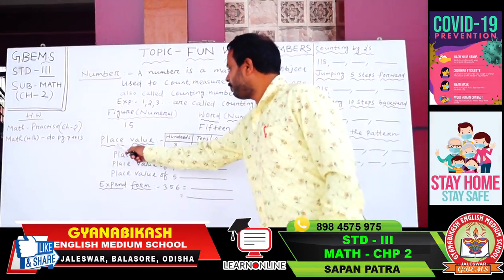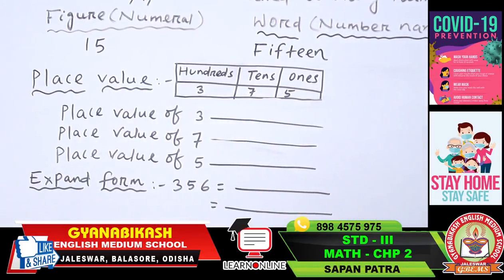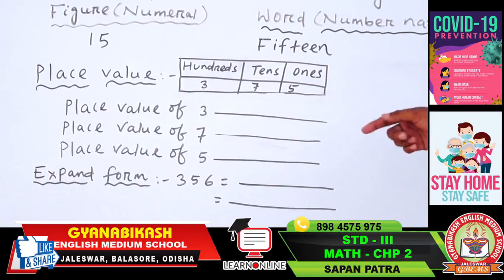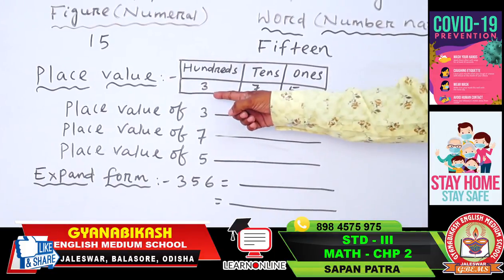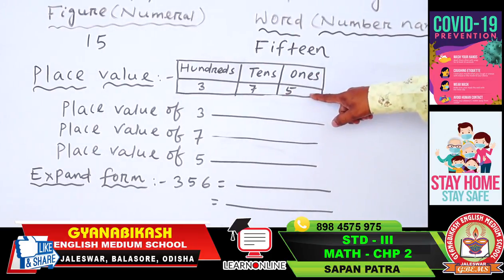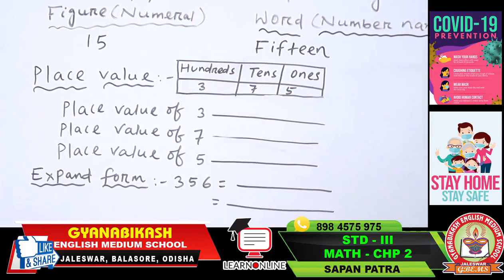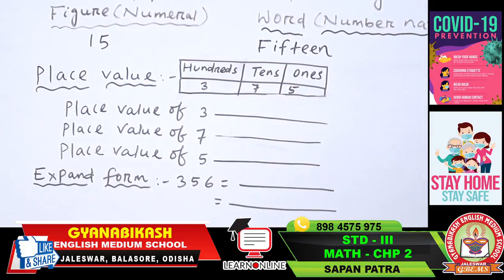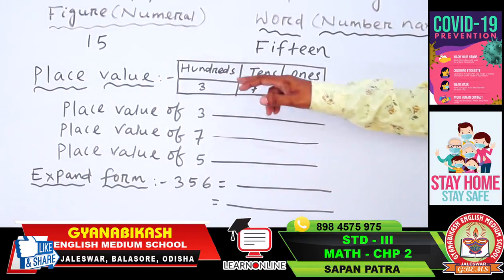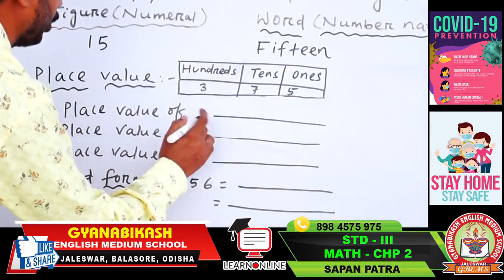Now let us come to place value. We can find out the place value of any number according to its placement. Suppose a number is 375. Here, 5 is in the ones place, 7 is in the tens place, and 3 is in the hundreds place. So the place value of 3 is 300.